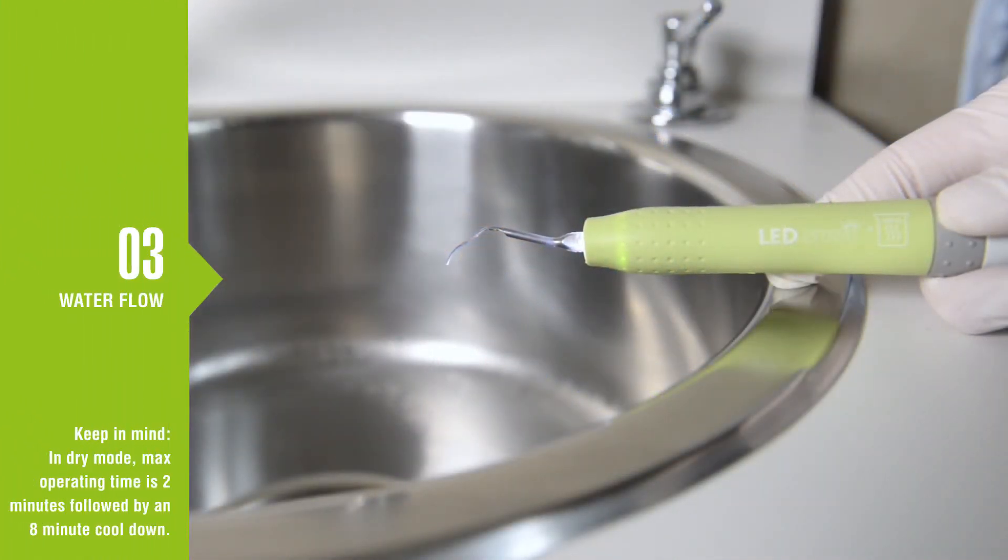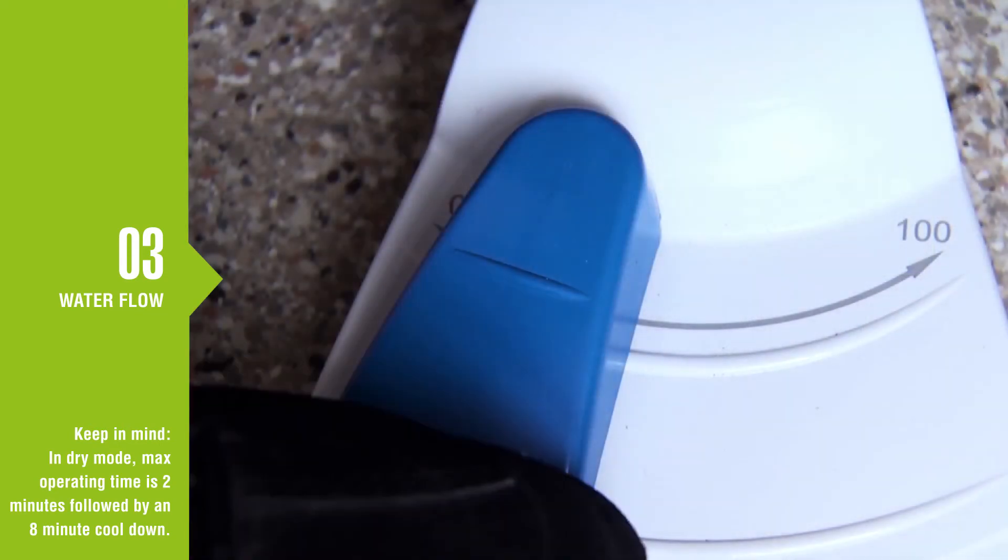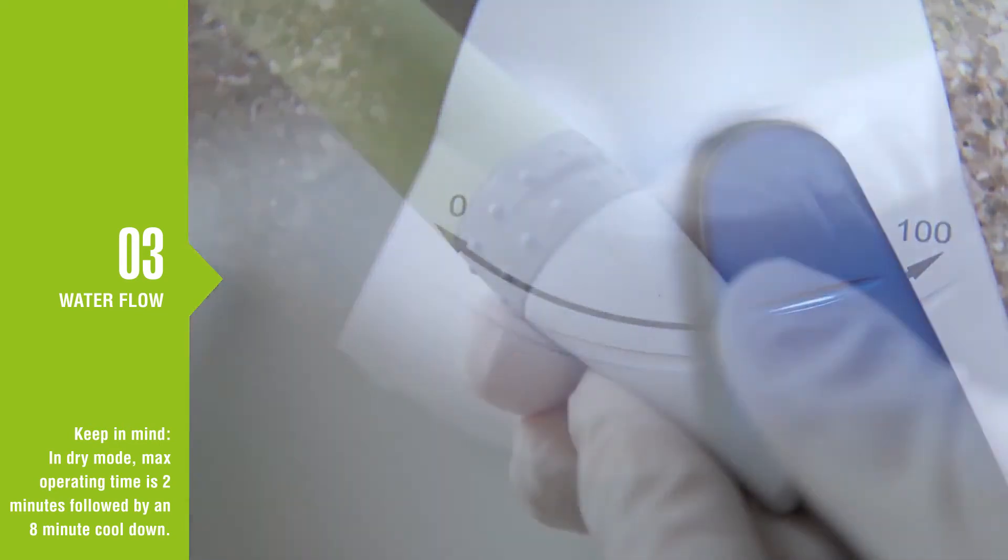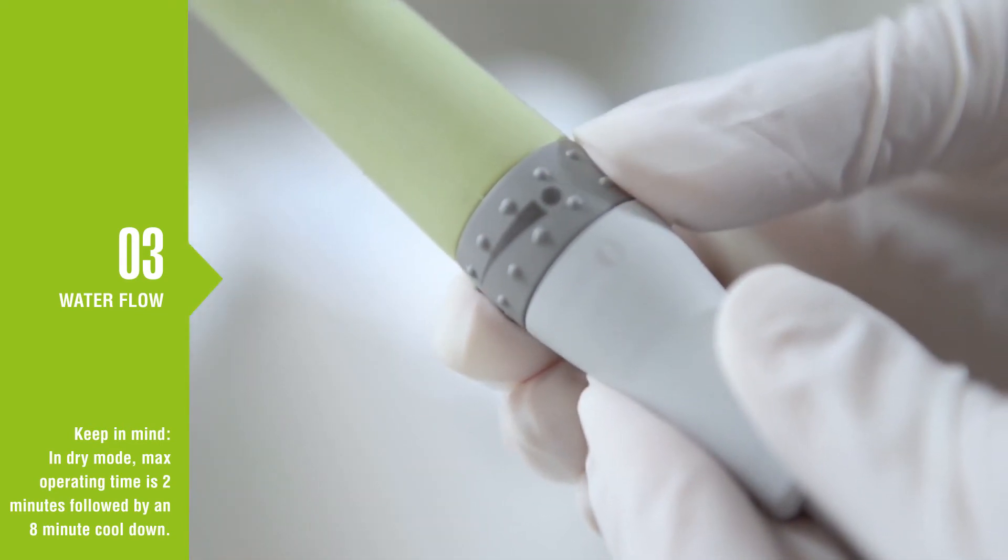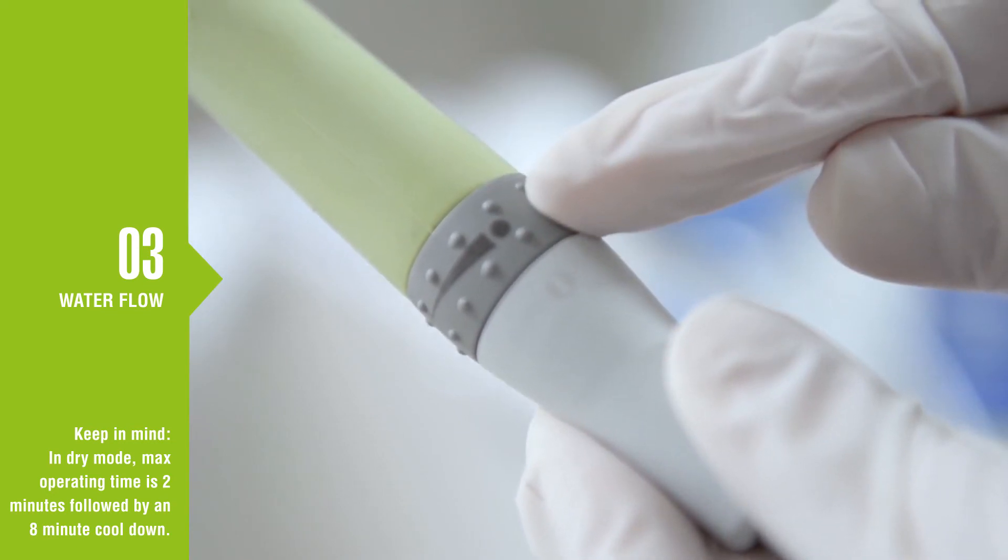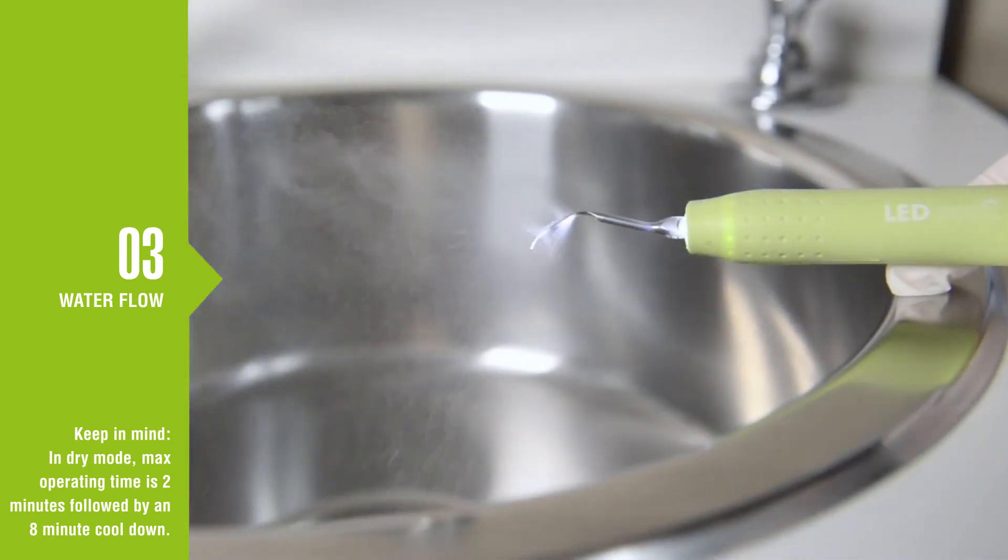With the scaler handpiece over the sink, press the foot control pedal and adjust the water flow using the valve on the handpiece. The dot on the connector indicates max water flow.